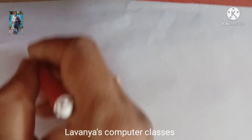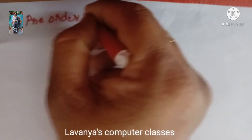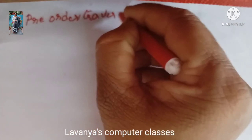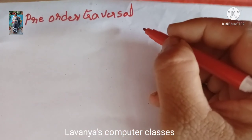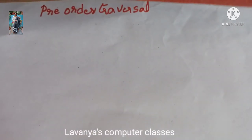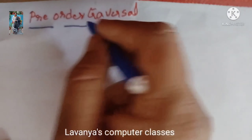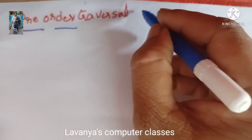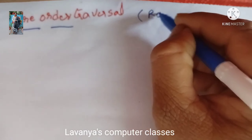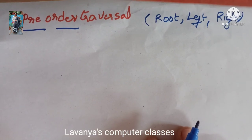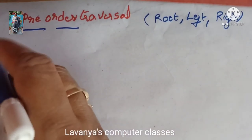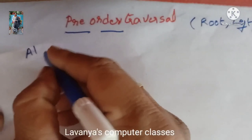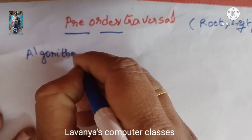Now I will explain tree traversal with full explanation. First I will explain pre-order traversal. There are three tree traversal methods: pre-order, in-order, and post-order. In this video I will explain full detail about pre-order traversal.